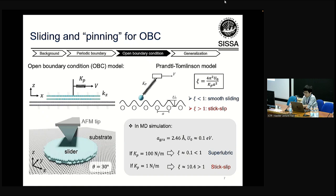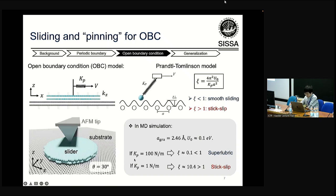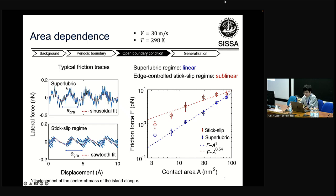In the PT model, two regimes are divided by a dimensionless parameter ksi, which describes the competition between the sliding energy barrier U0 and the lateral stiffness kp. When ksi is smaller than one: smooth sliding; larger than one: stick-slip. Borrowing this idea into our simulation with fixed lattice spacing and sliding energy barrier, we can switch between these two regimes by adjusting the lateral stiffness of the spring. Here are two typical friction traces: for the superlubric regime the lateral force evolves sinusoidally, but for stick-slip regime it's an apparent sawtooth function.